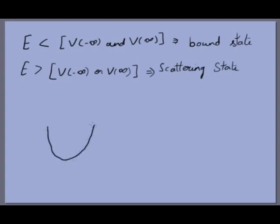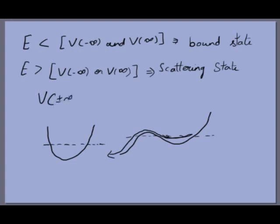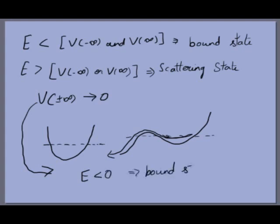If the energy is greater than either V(−∞) or V(+∞), then it is a scattering state. In the first quantum mechanical case we saw — the infinite square well — the energy is smaller than both V(−∞) and V(+∞), so it is a bound state. For real-life cases where the potential at plus and minus infinity goes to zero, we have a much simpler rule: if the total energy is less than zero it is a bound state, and if the total energy is greater than zero it is a scattering state.